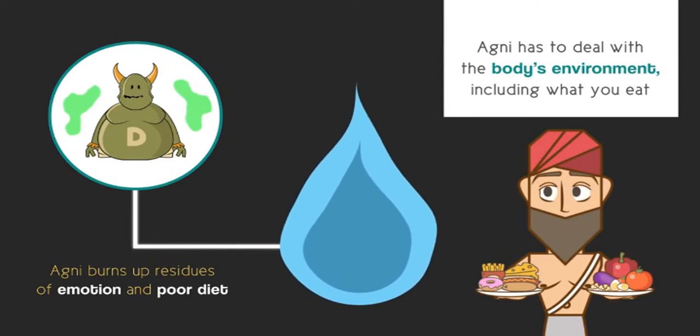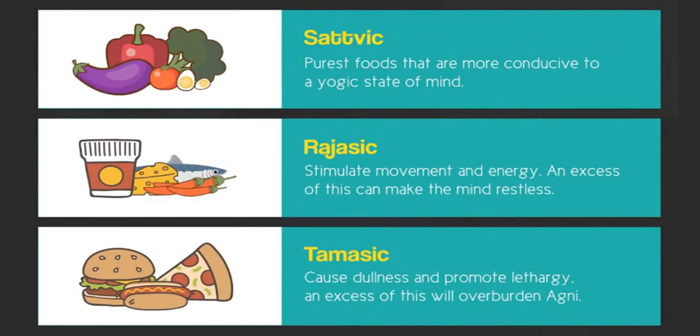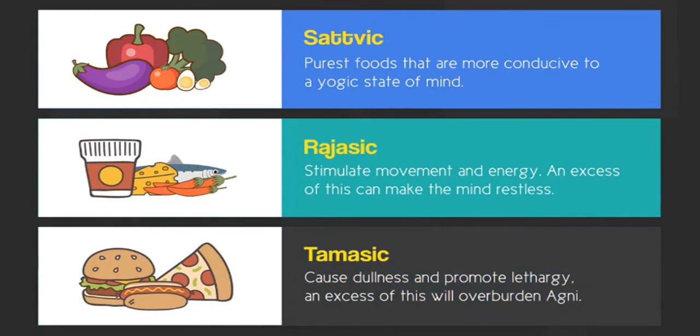So we mentioned that the quality of foods affects Agni greatly. Well, the yogis divided food into three groups. Sattva, Rajas and Tamas. Sattvic is the most conducive to yogic and bodily balance. But in today's society, it's a challenge to not fall into tamasic food. Fast food and ready-made stuff fall into this category. They all damage the fire. Ultimately, our bodily intuition will know what category of food falls into and will guide us.